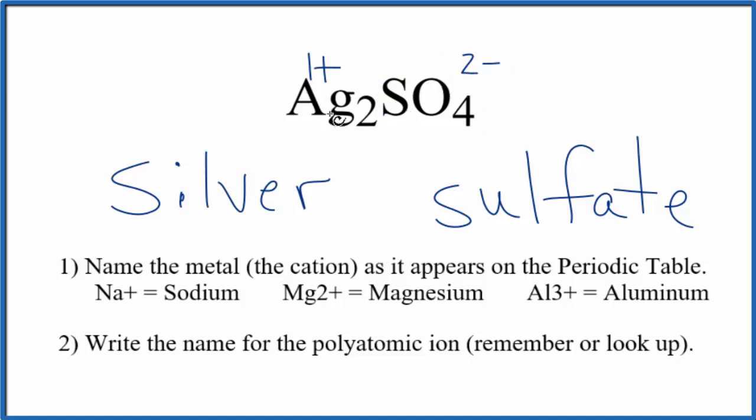And because silver is going to be 1 plus, we need two of these 1 plus silver ions to balance the charge on the whole sulfate ion here, have a net charge of zero.